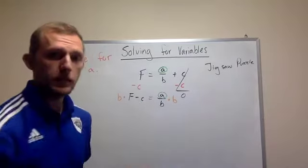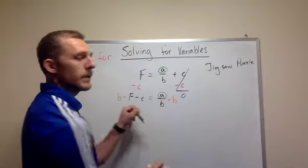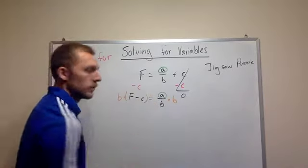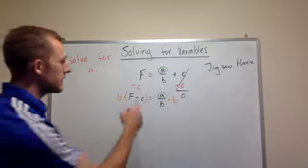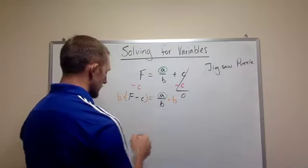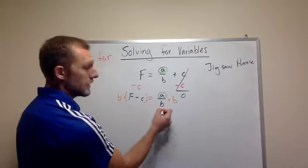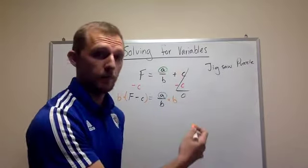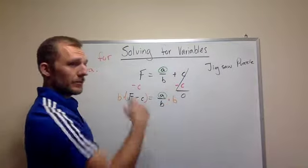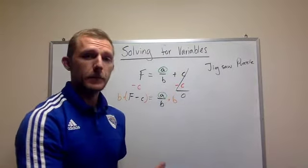Whenever you multiply times B, it's not just one item over here. It's the whole thing. So make sure that you put it in parentheses and you multiply it on both sides. Again, why do we multiply instead of divide? Well, B is in the denominator, so we have to multiply. If it was in the numerator, then we would have to divide.